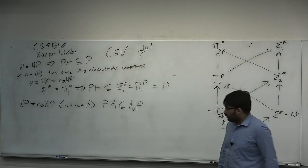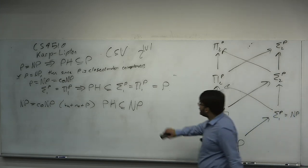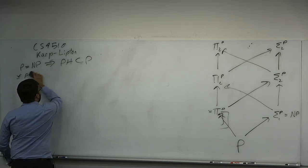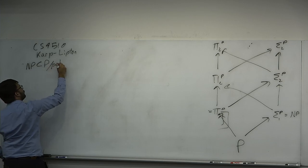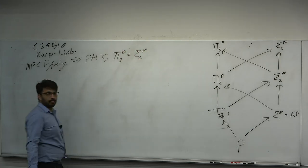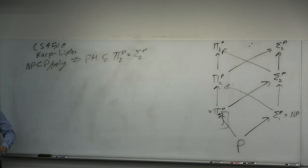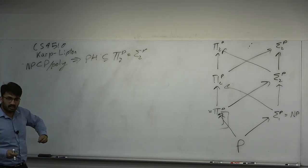Let's do the Karp-Lipton theorem. It is famous because it is a connection between uniform and non-uniform complexity classes. It was thought for a long time that you could not relate uniform and non-uniform complexity bounds, and this theorem ended up being a counterexample. The Karp-Lipton theorem says: if NP is contained in P/poly, then the polynomial hierarchy collapses to the second level. Four different parts of the course come together to prove this.